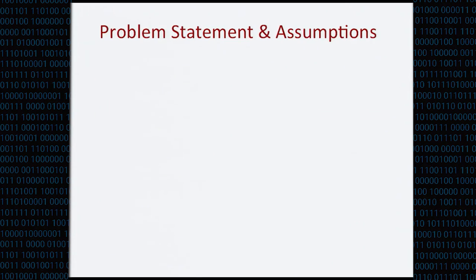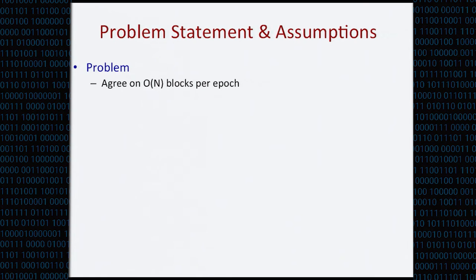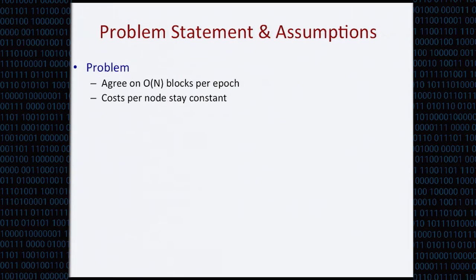Formally, the problem we solve is to allow all network participants to agree on O(N) blocks per protocol run. Because each block can include the same amount of transactions, agreeing on O(N) blocks allows us to scale up the generation rate as the network size increases. We want to do this with the constraint that we do not increase the cost per node at every protocol run — we do not consume more bandwidth or require more computation cost at every node.